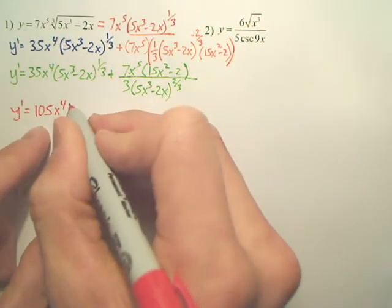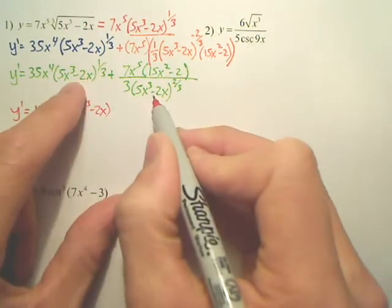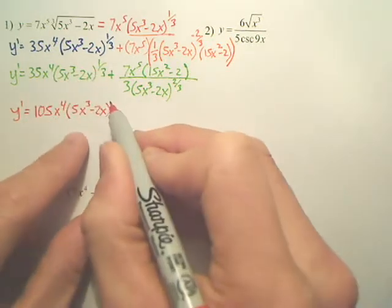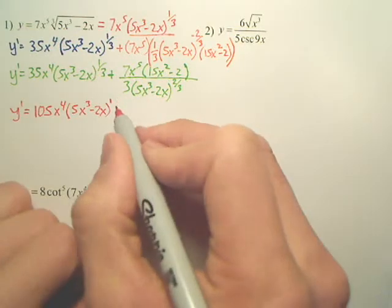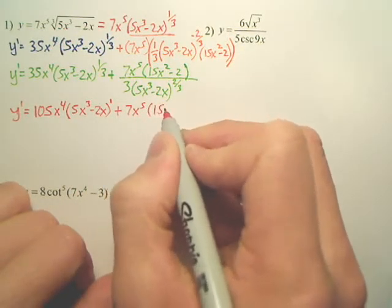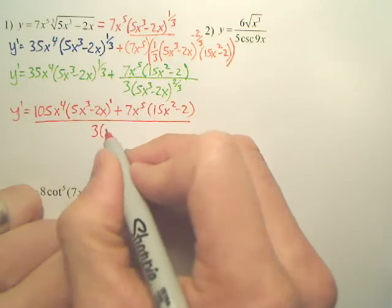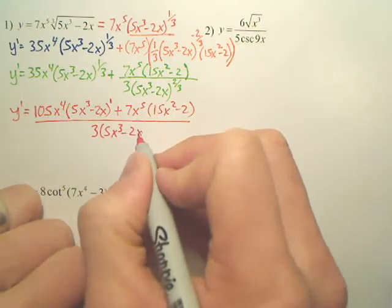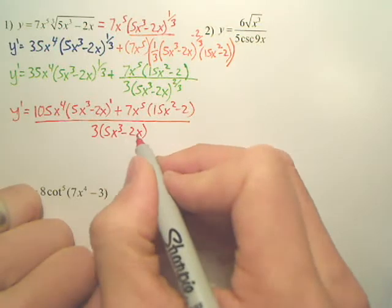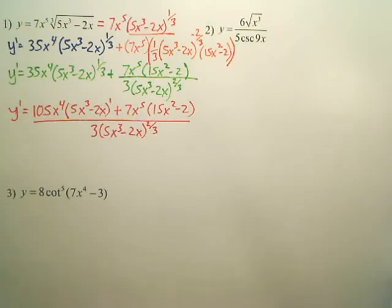A lot of times that nice and neatly happens. Again, when you multiply these two things, the 1/3 and the 2/3 makes a 1. You don't need the 1, but there it is. Plus, you just leave this part. And now it's all over 3, 5x to the 3rd minus 2x all to the 2/3 power. That, in my mind, would be okay. But let's keep going.